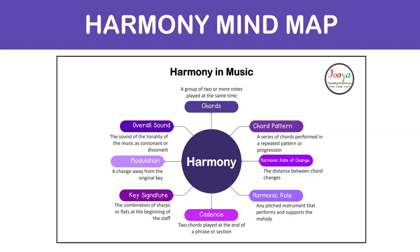A chord is simply a group of two or more instruments played at the same time. A chord pattern is a series of chords performed in a repeated pattern or progression.